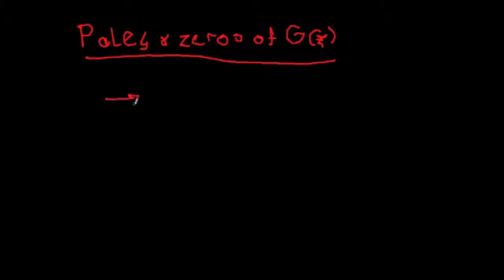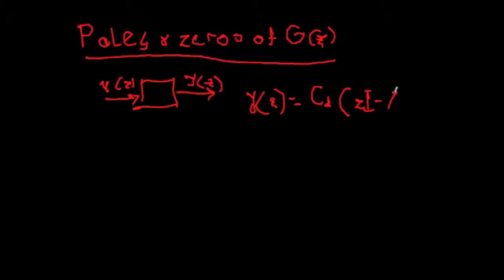So we know already for the input output system representation that transfer function that we obtain is nothing but Y(z), this is in complex domain, it is just C discrete z i minus phi minus one gamma U(z). And this expression here is nothing but rational G(z) transfer function.